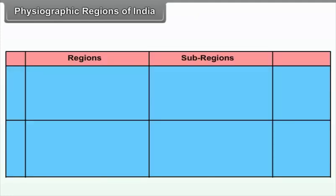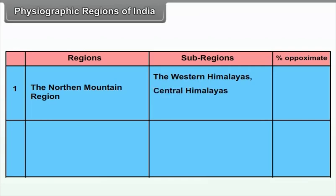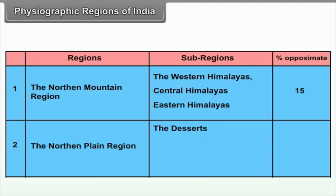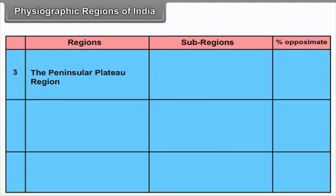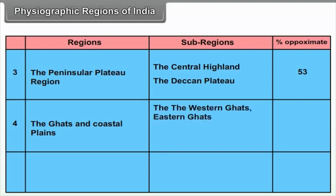The physiographic regions of India and their approximate percentage coverage: The Northern Mountain Region — subregions: Western Himalayas, Central Himalayas, Eastern Himalayas — 15%. The Northern Plain Region — subregions: The Deserts, Western Plain, Central Plain, Delta and Eastern Plain — 32%. The Peninsular Plateau Region — subregions: The Central Highlands, The Deccan Plateau — 53%. The Ghats and Coastal Plains — subregions: Western Ghats, Eastern Ghats, Western Coastal Plain, Eastern Coastal Plain.